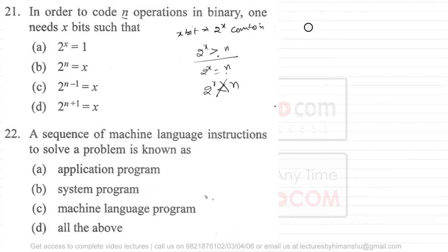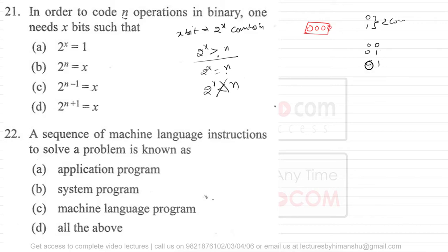Suppose you have four balls and you need to give one combination to each ball. You can use three bits or two bits to give the address, but you cannot use one bit — with one bit only two combinations are possible, with two bits four combinations are possible. So with two bits you can give a unique address to each of the four balls, and with three or more bits you can also address each ball uniquely.